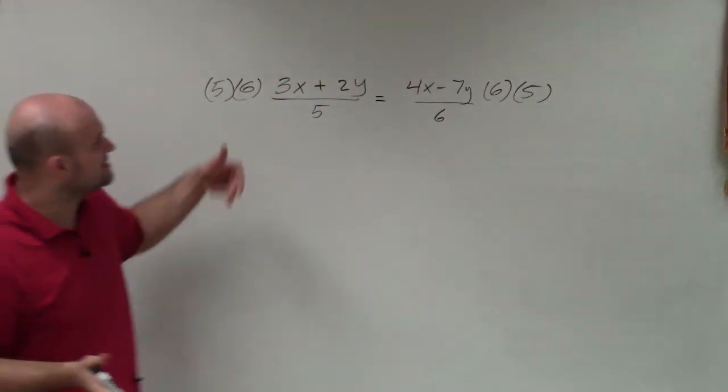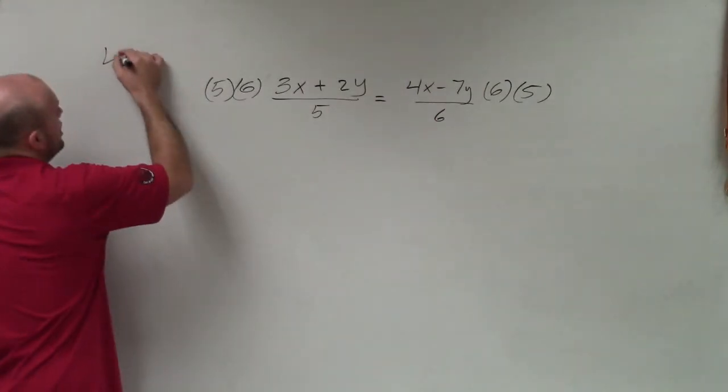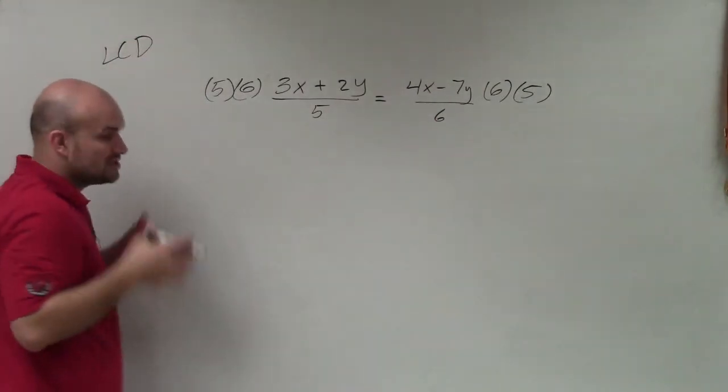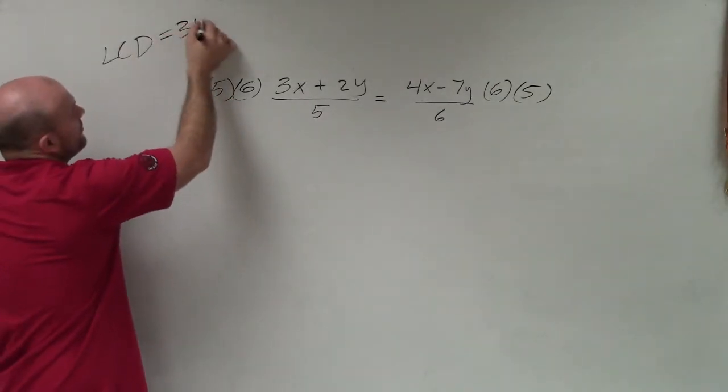What you can see is I have now just multiplied both sides of my equation by what we call the LCD, which is the least common denominator of 5 and 6, which in this case is equal to 30.